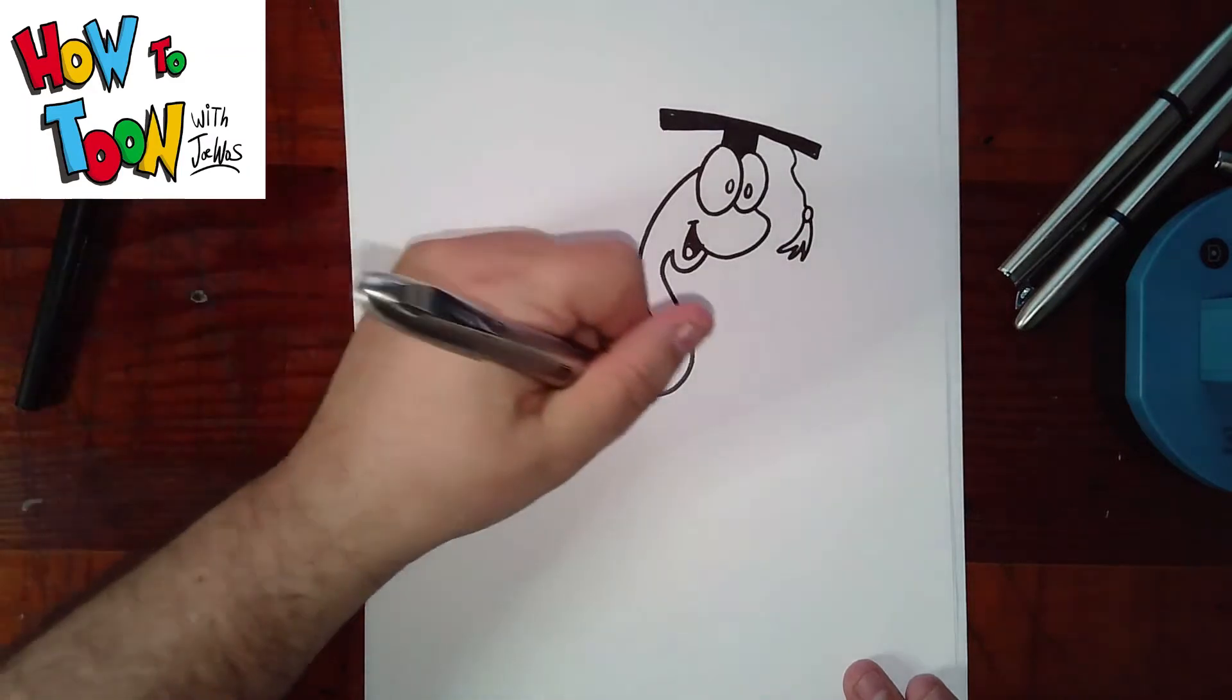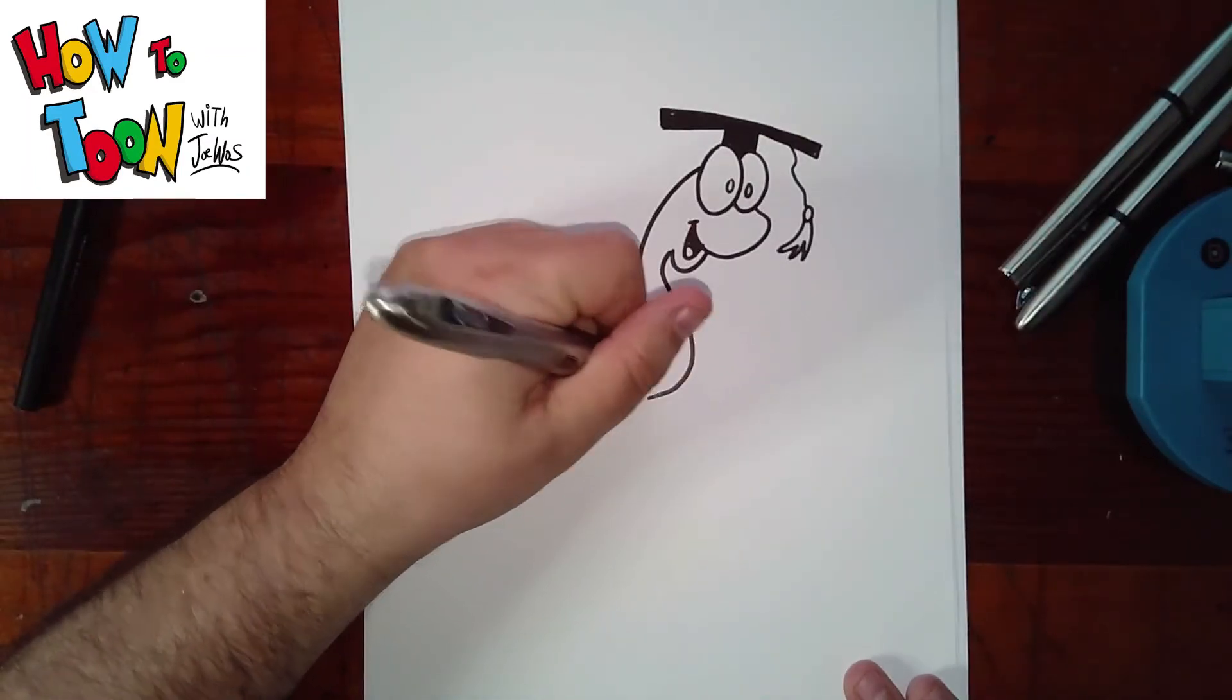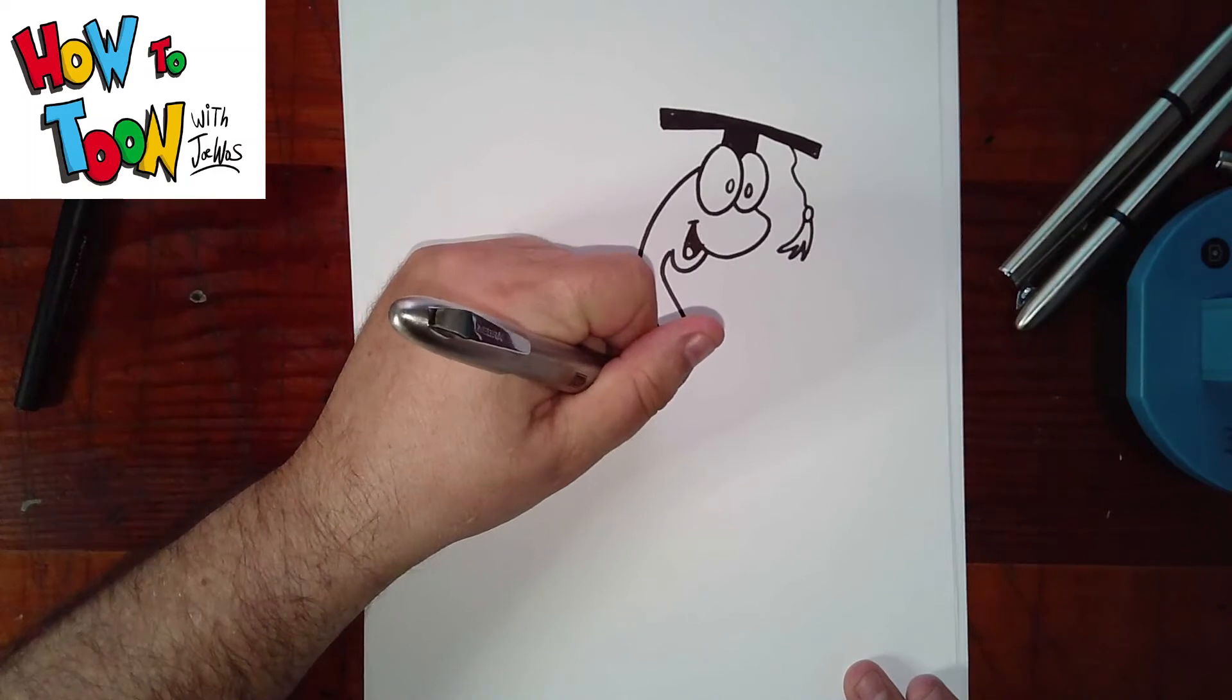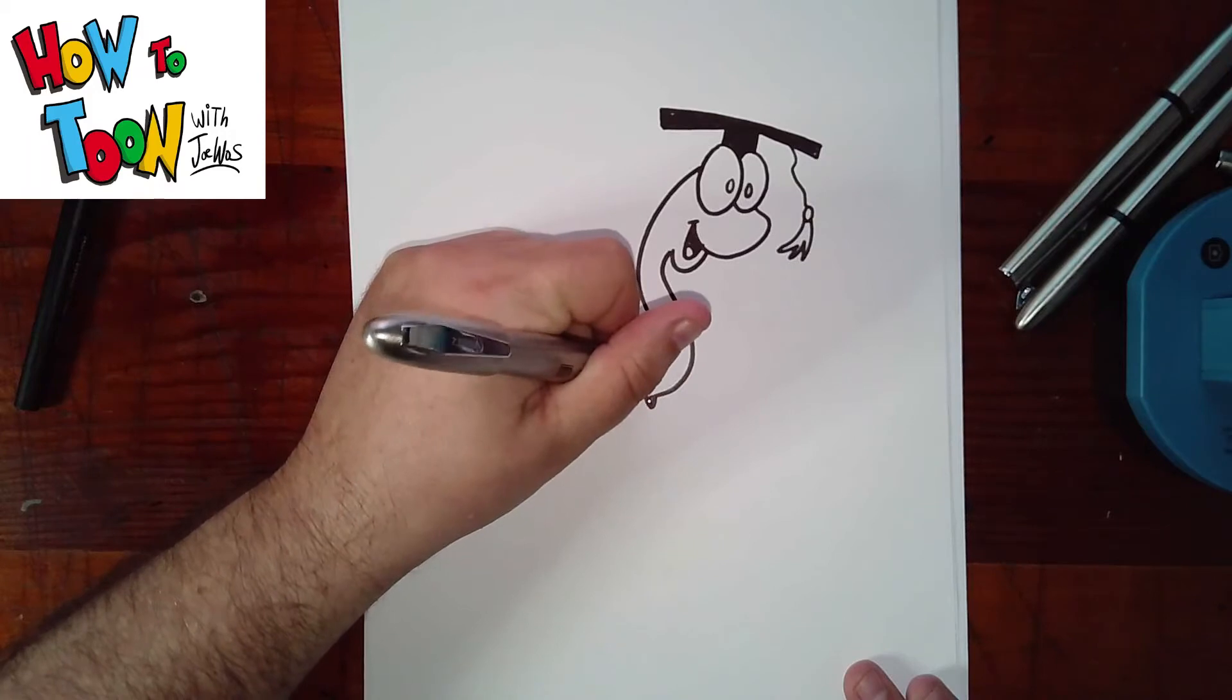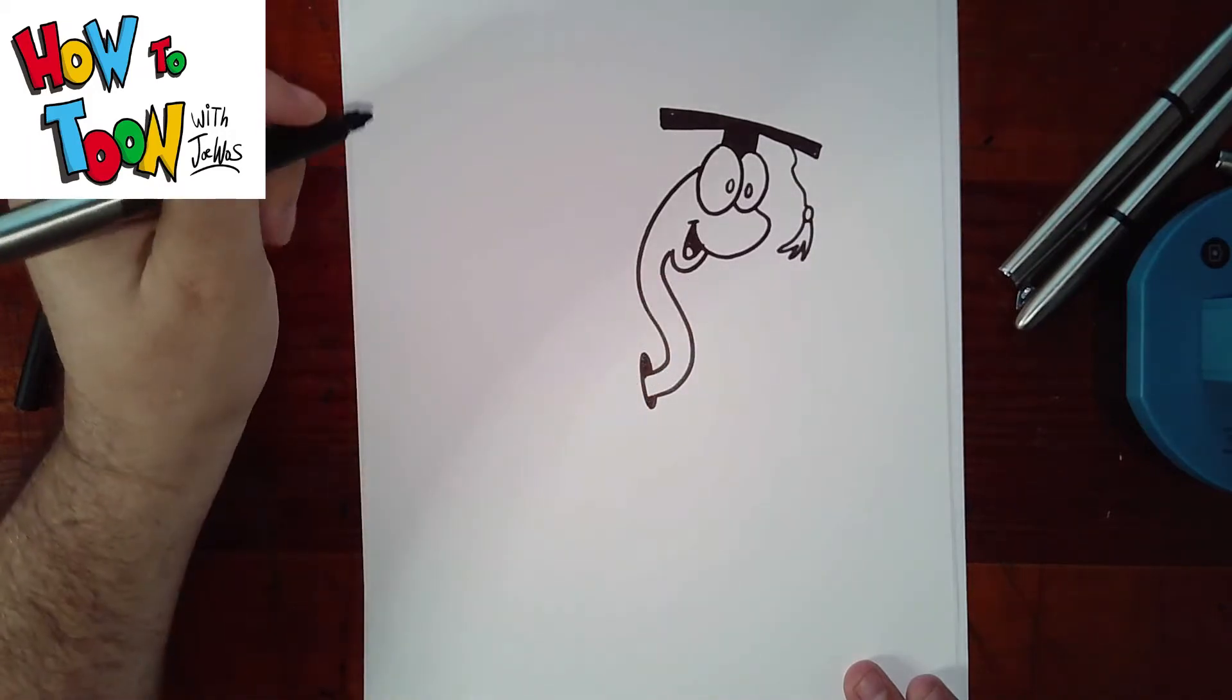Now for the hole in the apple, you draw a letter C, and then you shade in above and below there.